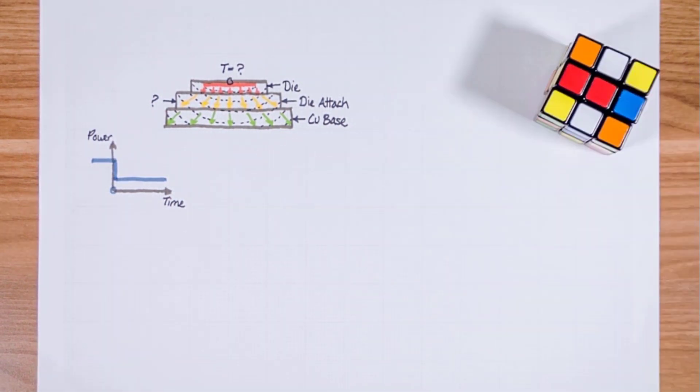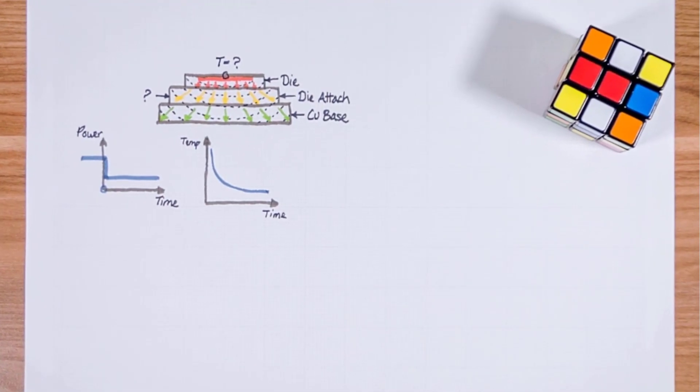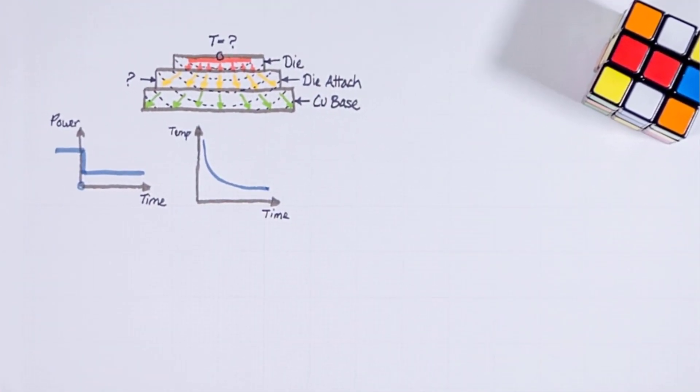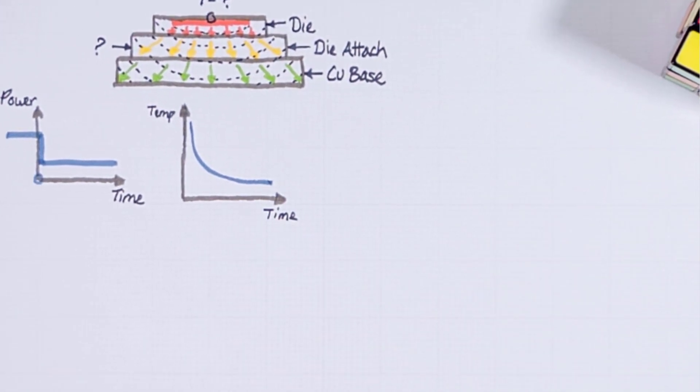This can be represented as a temperature versus time curve. You have probably seen cooling curves shown over a linear time scale in the form of an exponential function. For example this is the way your morning coffee cools down.